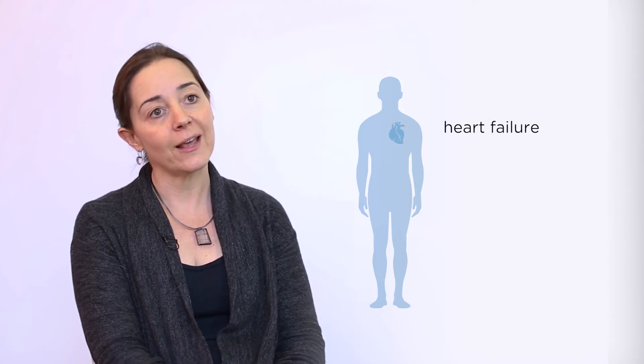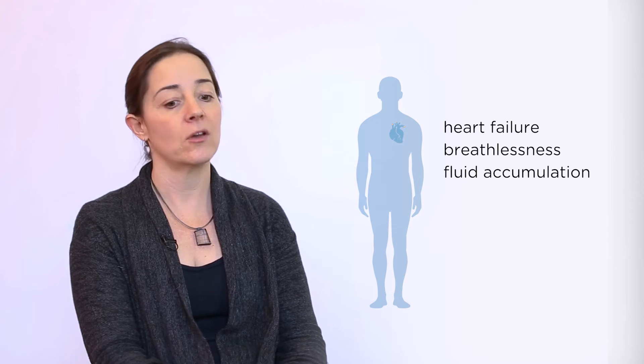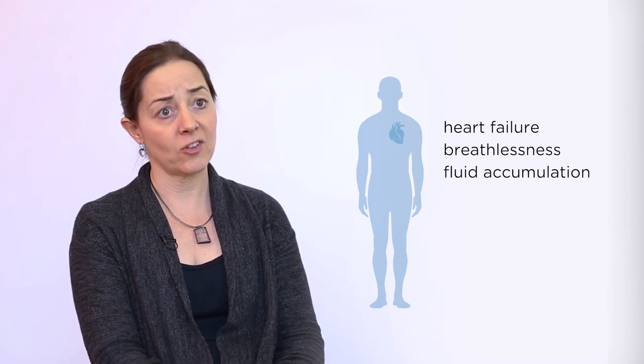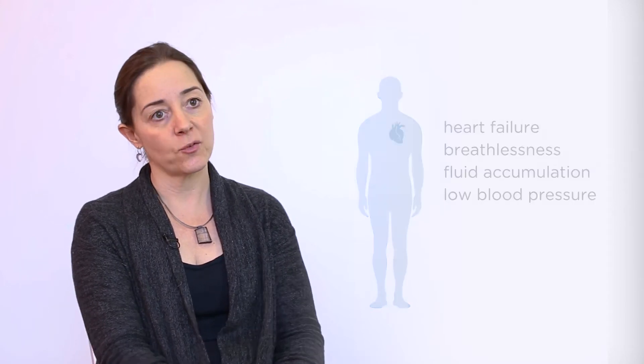The amyloid infiltrates into the heart and makes it stiff, which means that it's difficult for it to fill and then to pump the blood out. That tends to present with heart failure, causing breathlessness and also accumulation of fluid behind the heart with swollen ankles, sometimes a feeling of abdominal discomfort because the liver is getting a bit swollen. It can also cause low blood pressure.